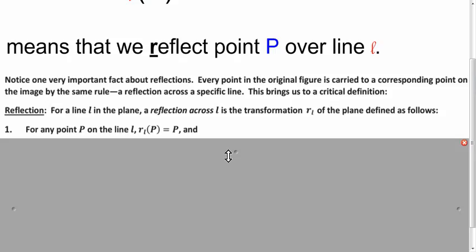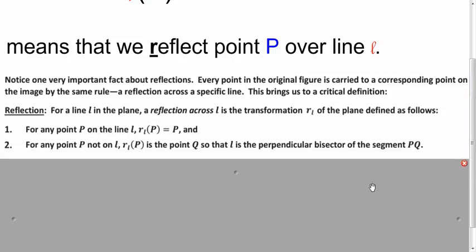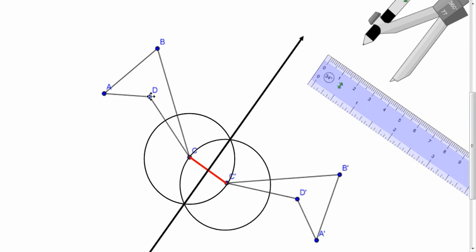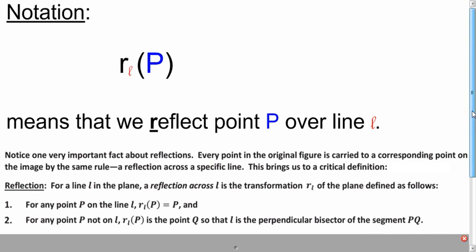The first part of the definition is that any point on the line of reflection doesn't change. It just stays the same. That's what this first line says. And for every other point that's not on the line, you get a point on the opposite side of the line so that the line of reflection is the perpendicular bisector of that segment. And that's what we looked at over in this construction. When we reflect D over this line, the line of reflection is the perpendicular bisector of D, D prime. That's our formal definition.